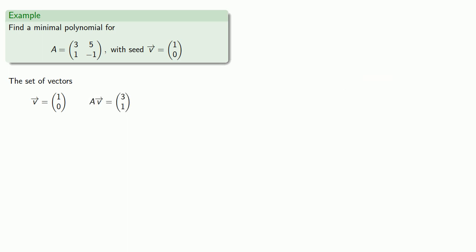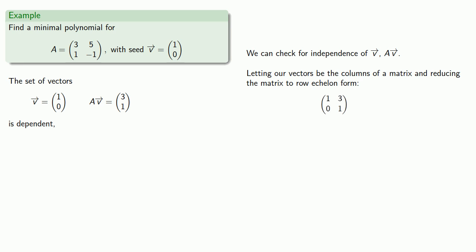We'll find AV. And so maybe we're lucky and the set of these two vectors is dependent. And so we can check for the independence of the set of vectors V, AV.